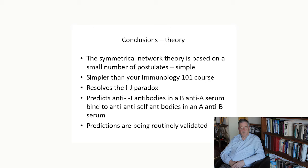In conclusion, the symmetrical network theory is based on a small number of postulates — simpler than Immunology 101, where you have to learn a very large number of facts. The theory resolves the IJ paradox. It predicts anti-IJ antibodies in an A-anti-B response that bind to the anti-IJ antibodies in the converse immune serum. Predictions of the theory are in fact being routinely validated at network immunology. Thank you for your attention.